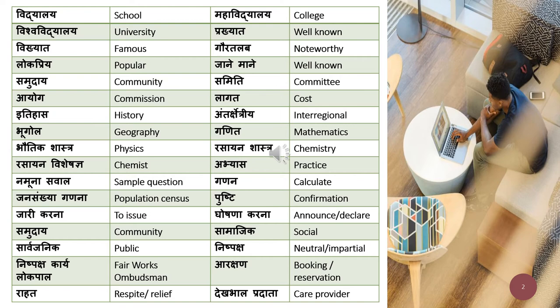I have some sample questions — namuna saval. Ganan means 'to calculate.' Janasankya ganana means 'population census.' Pushti means 'confirmation.' Jari karna means 'to announce,' 'to issue,' or 'to come out with a notification.' Ghoshna karna also means 'to announce' or more precisely 'to declare.' Samajik is 'social' and sarvajanic is 'public.'